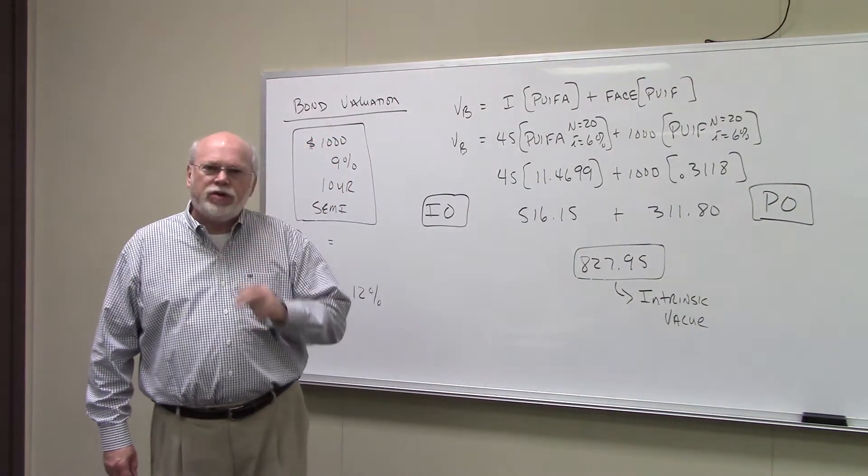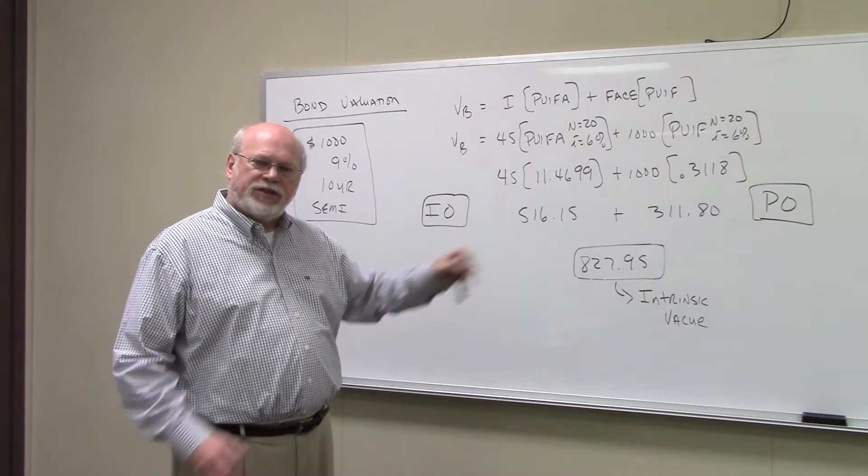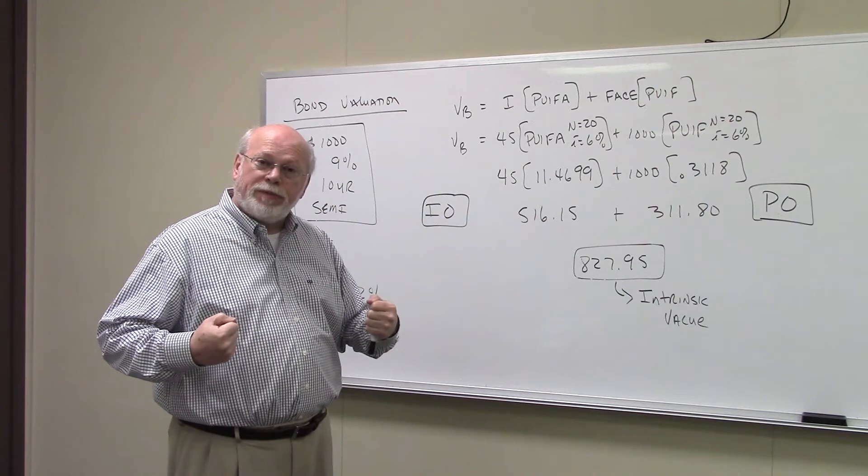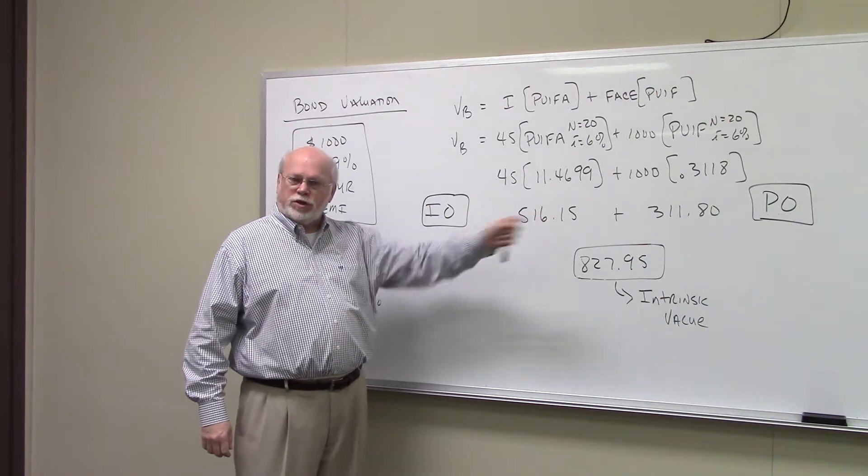As students, you need to understand that in the market now, lots of times, they'll take a traditional bond like this and they do what they call strip the bond. That is, they divide up the interest from the principal portion of the bond.